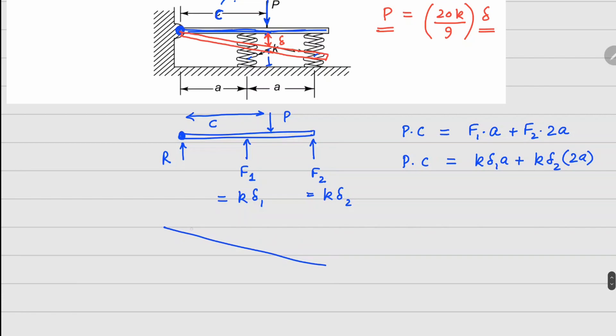Now from the geometrical compatibility perspective, you can see that if this is your delta_1, this is your delta_2, this is a, this is a, this gives us delta_2 equals two times delta_1. So PC is going to be ka delta_1 plus 4ka delta_1, or PC equals 5ka delta_1.